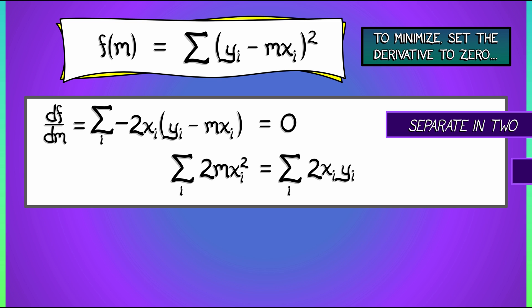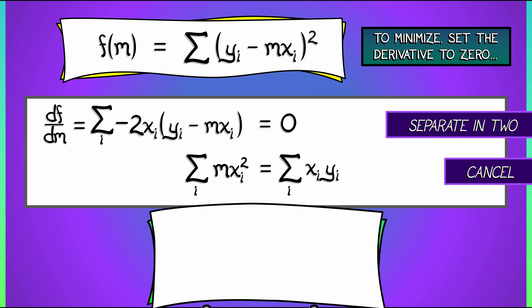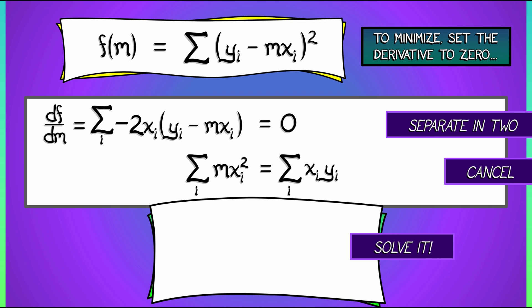Now, because this two appears in all terms of the sum, we can factor it out. We can cancel that from each side of the equation. We wind up with the sum over i of mxi squared equals the sum over i of xi yi. On the left, that m is a constant factor of each and every term. We can factor it out, divide through, and solve for m.